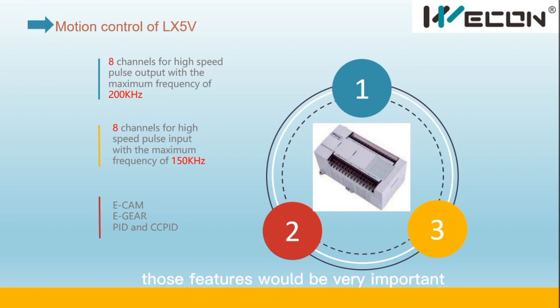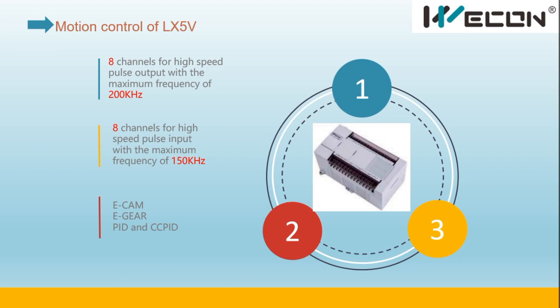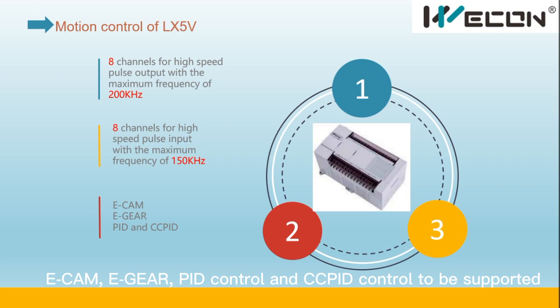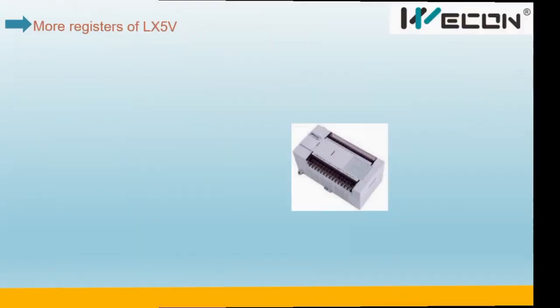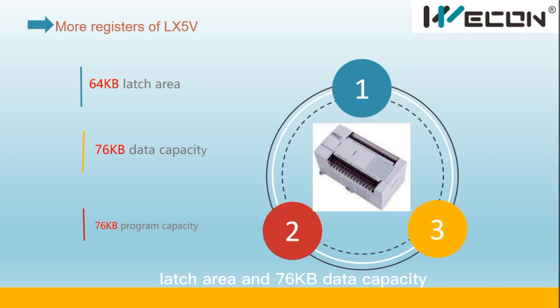For motion control, the LX5e PLC's features are very important. High-speed pulse output can be eight channels at 200kHz, high-speed pulse input can be eight channels at 150kHz, and E-cam and E-gear are supported, as well as cascade PID control. The LX5e also supports more registers — a 64K data area and 76K data and program capacity.